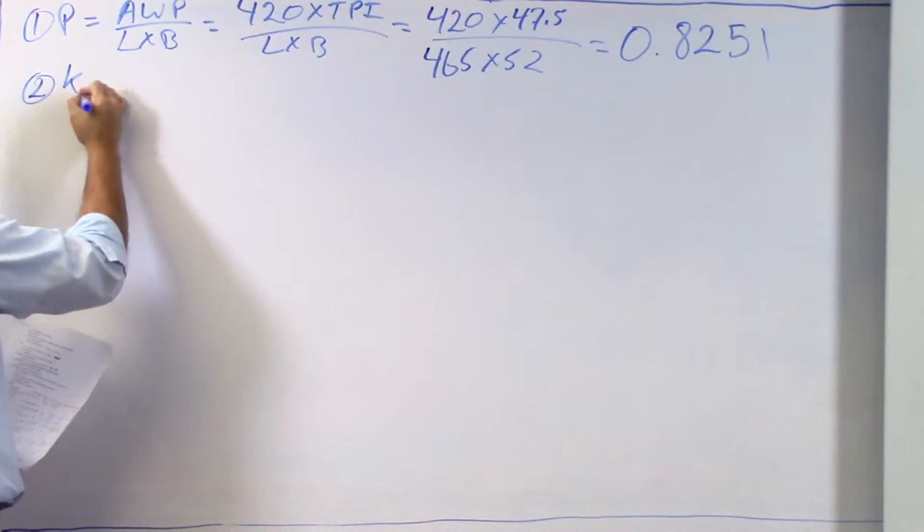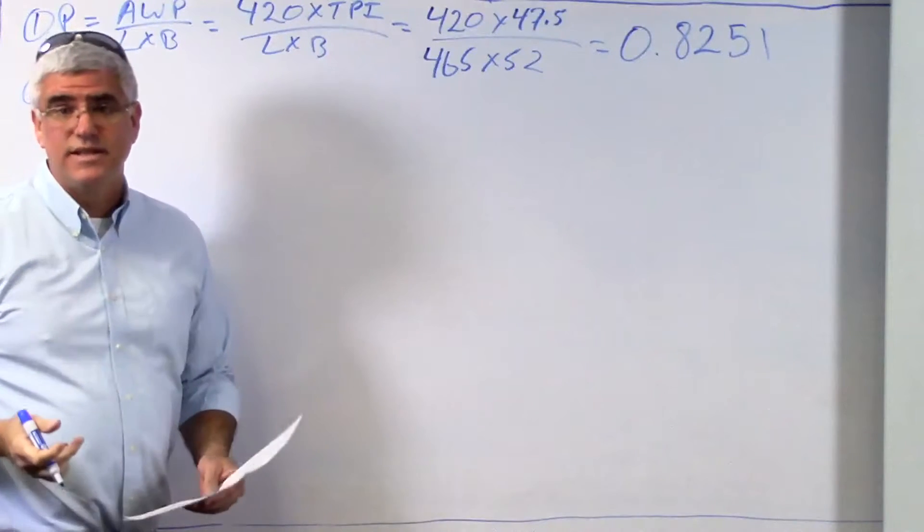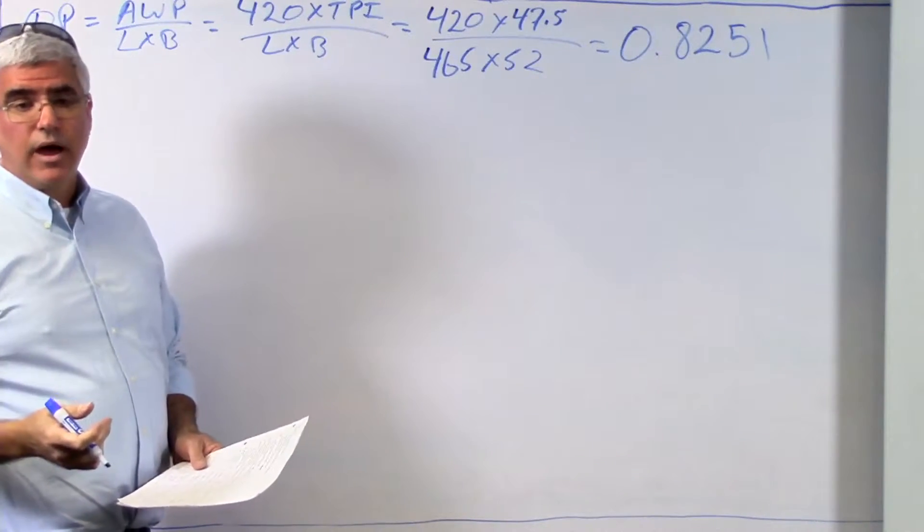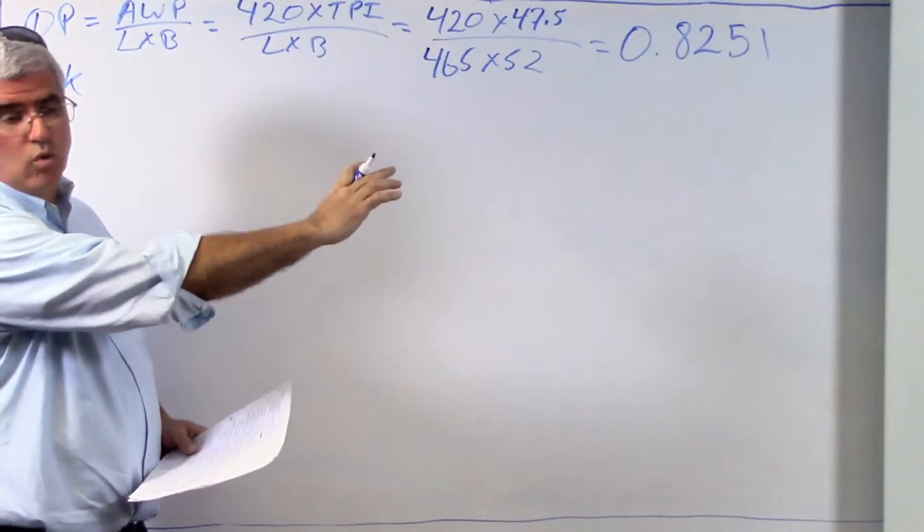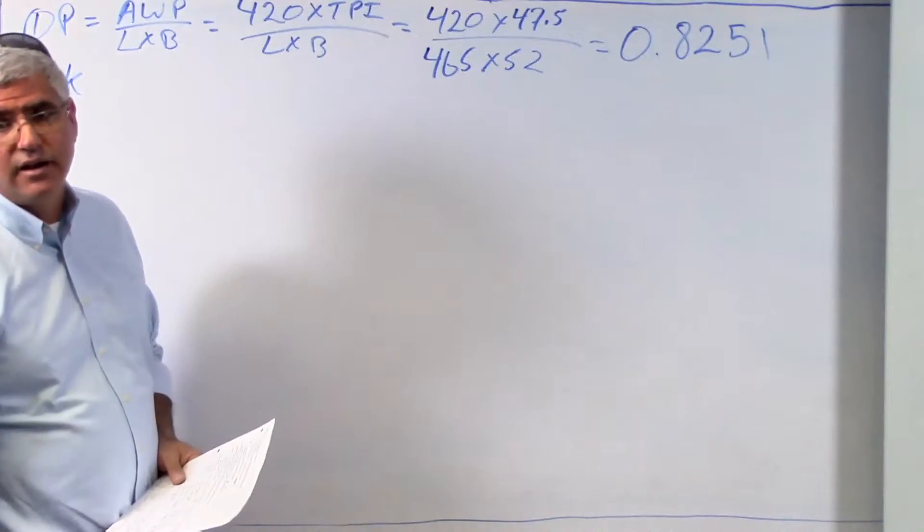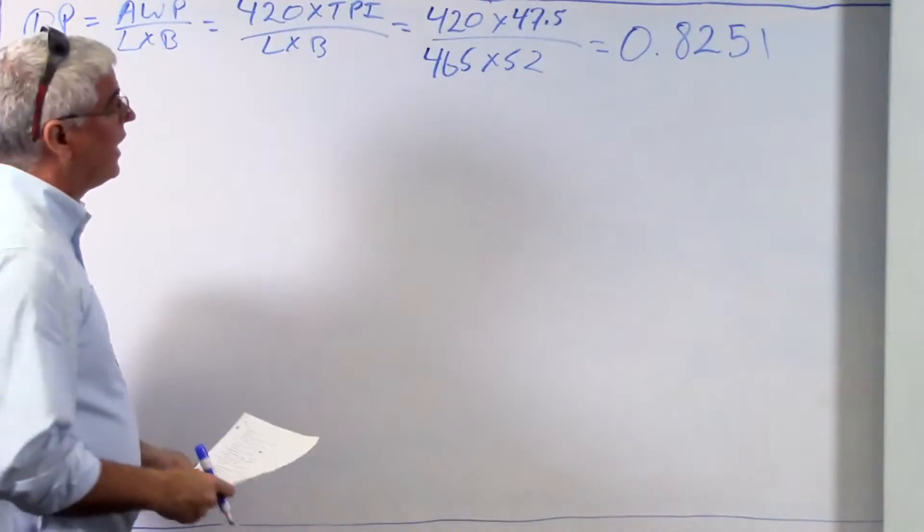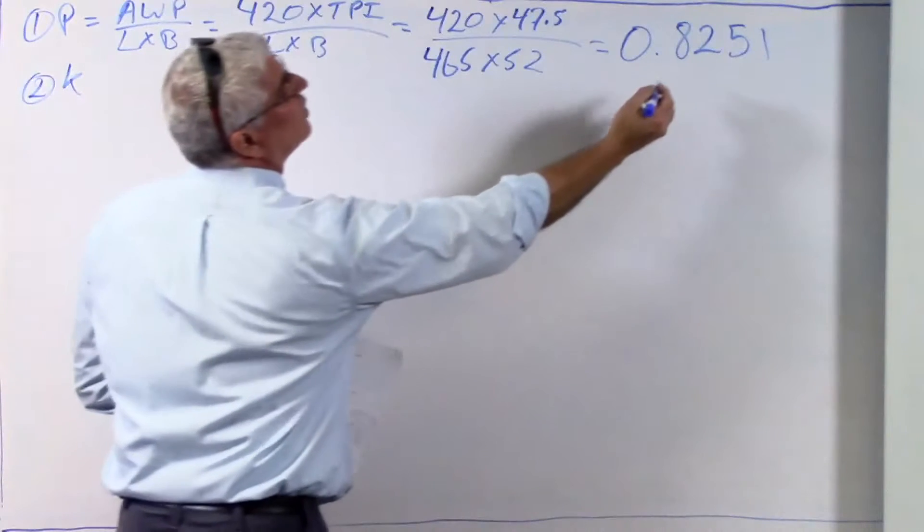Step two, now I'm going to interpolate k. In order to do this, I have to go to the deadweight scale. And on the deadweight scale, there is a water plane coefficient and k table over halfway down on the right hand side. And so we're going to go to that now. And if I go to that, what I'm going to now need to do is interpolate.